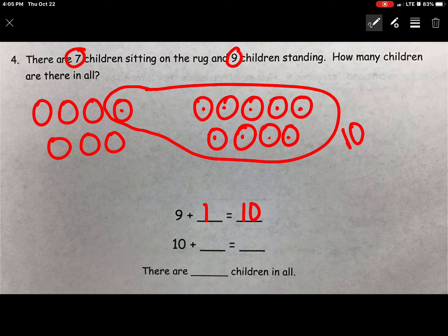Now I'm going to look at what was not put into my group of 10. I have 1, 2, 3, 4, 5, 6. I'm going to label my group. Now I know that 10 plus 6 is going to equal 16. There are 16 children in all.